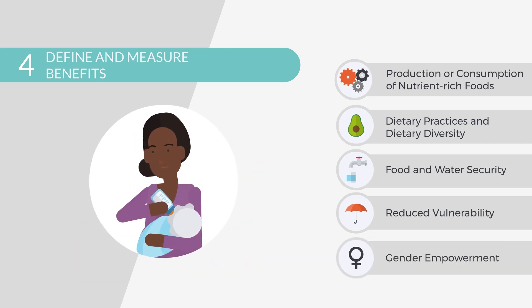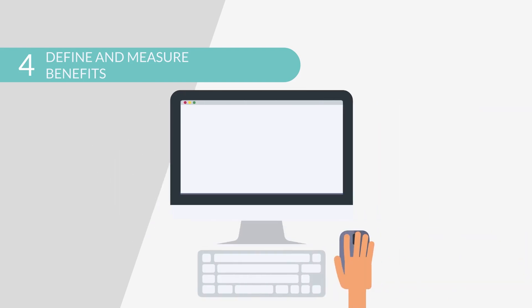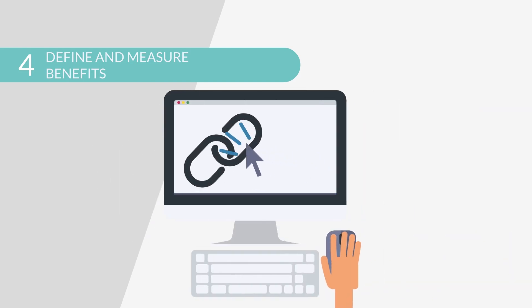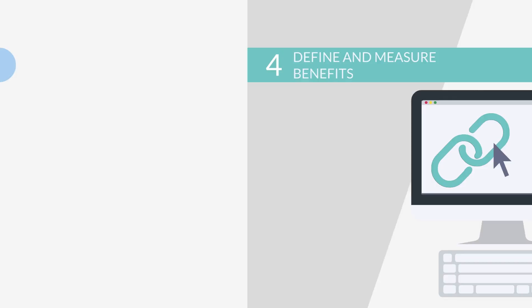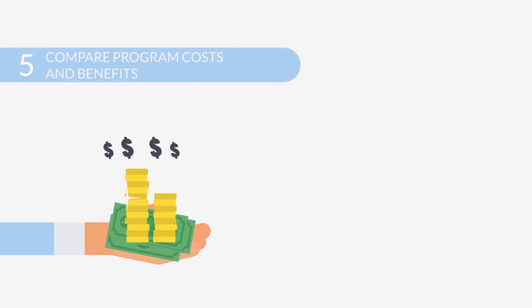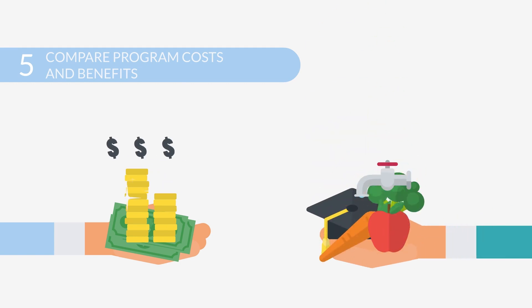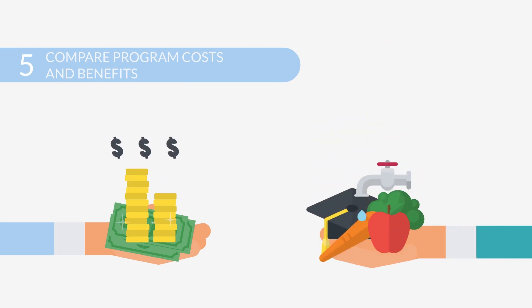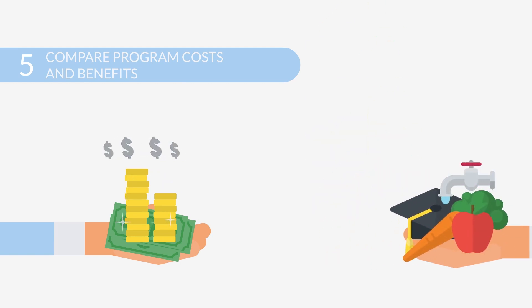Ultimately, these changes will lead to improved maternal and child nutrition and overall economic well-being. The guidance document shares links to existing resources on conducting impact evaluations for multisectoral nutrition programs. The final steps are to estimate total program costs and compare these to the range of benefits measured through program monitoring or evaluation.